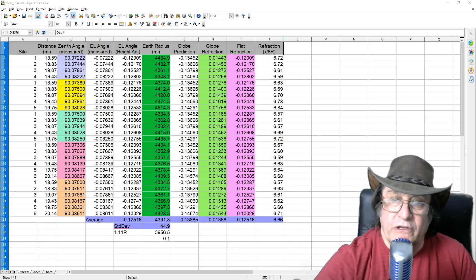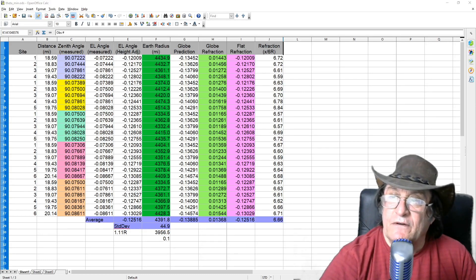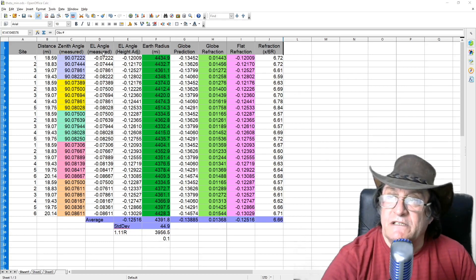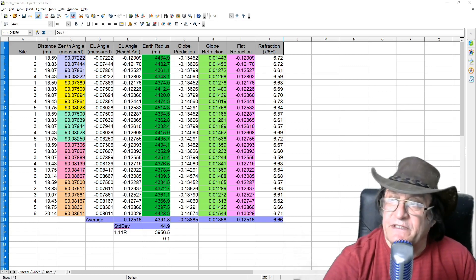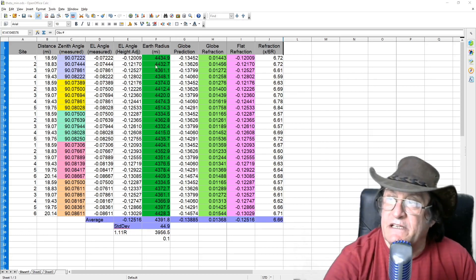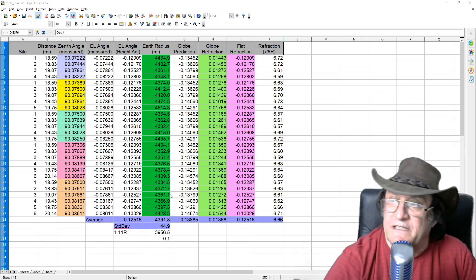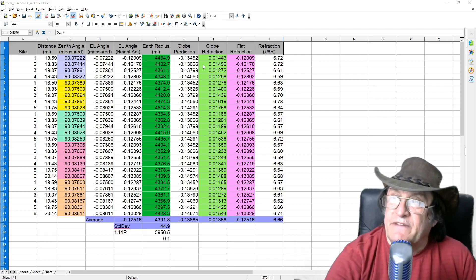Now here's my new and improved spreadsheet. I've added a couple of columns and I've also changed these angles to be negative to match the ones in JT's spreadsheet. JT had negative angles there and I had them as positive. So I've changed them to match. It doesn't change the radius of the Earth. The radius of the Earth is still positive. Now I've added four columns.